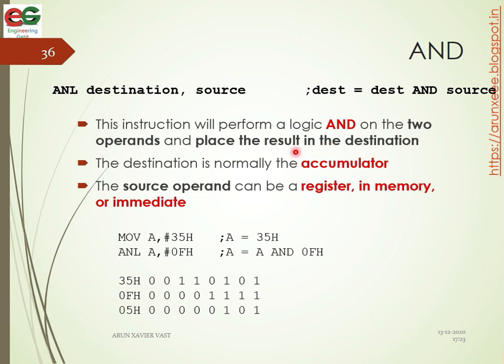The result is placed in the destination, which is normally the accumulator. The source operand can be a register, a memory location, or an immediate value. For example, we have two data values to work with.